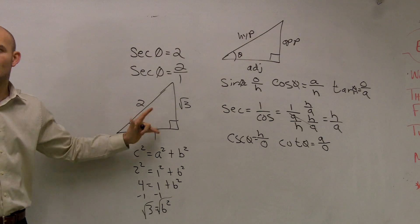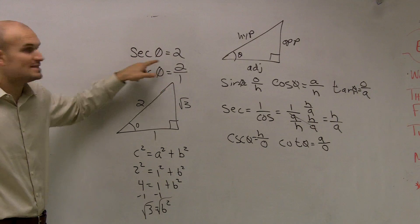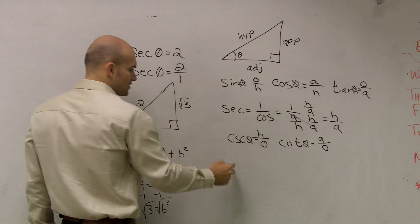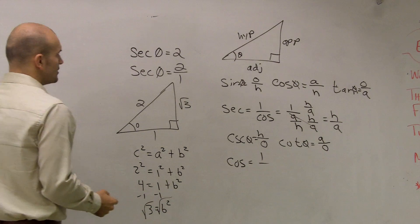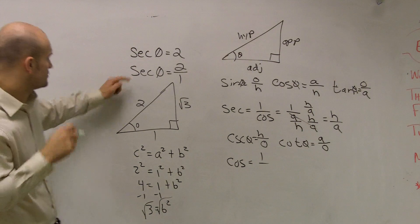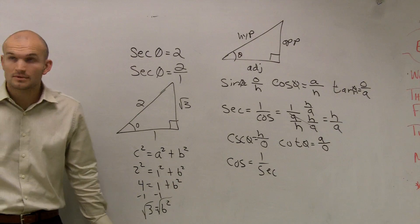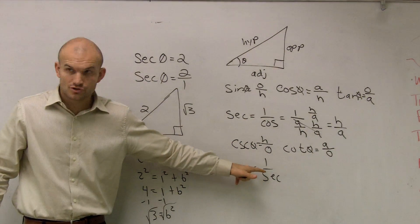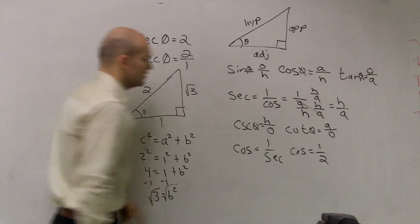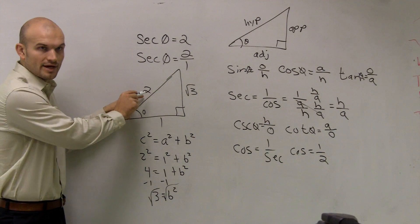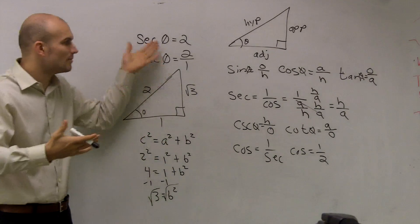Here's another way you could approach this. If you didn't know how to write 2 as 2 over 1, you know secant is 2, and secant is 1 over cosine, so cosine is 1 over secant. That means cosine equals 1 over 2, which gives you adjacent over hypotenuse. Either way — writing 2 over 1 directly or finding cosine first — both methods give you the same triangle.